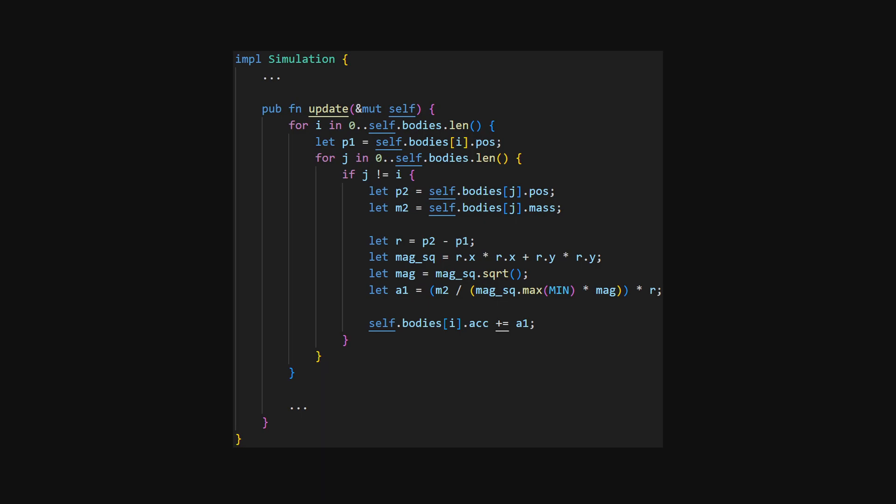There's nothing inherently wrong with nested loops, but because we're trying to increase the amount of bodies as far as possible, and both loops depend on the amount of bodies, they start to take more and more time really fast as n increases.